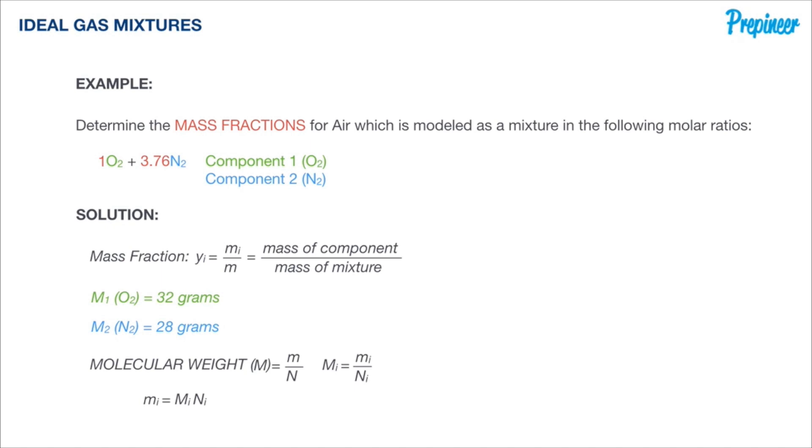Once we get the individual masses, we can just add them up and we'll be able to get the total mass of the mixture. The mass for oxygen within our mixture is 32 grams times one mole, so it's 32 grams. For nitrogen, it's 28 grams times 3.76 moles, or 105.28 grams. Adding these two together, we're going to get a total mass for the mixture of 137.28 grams.